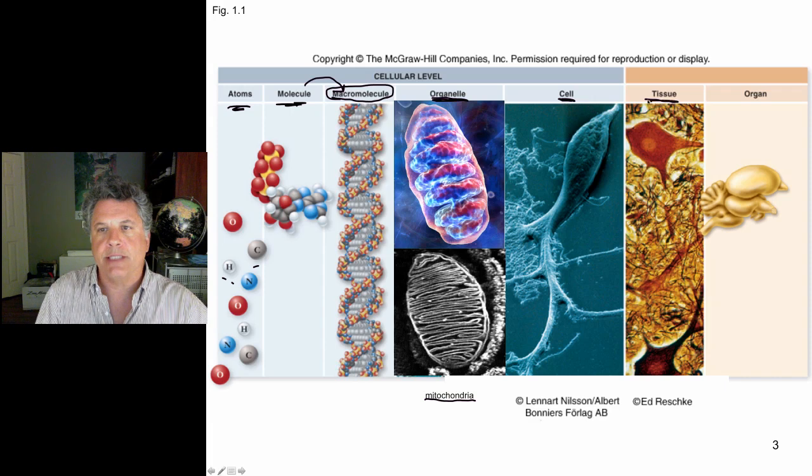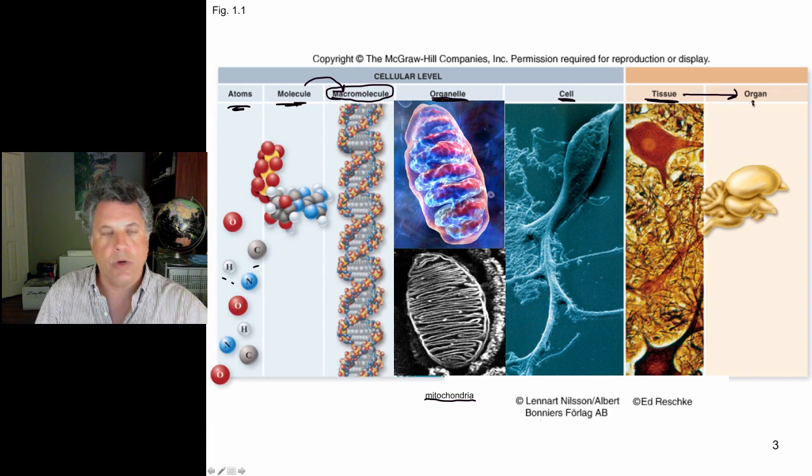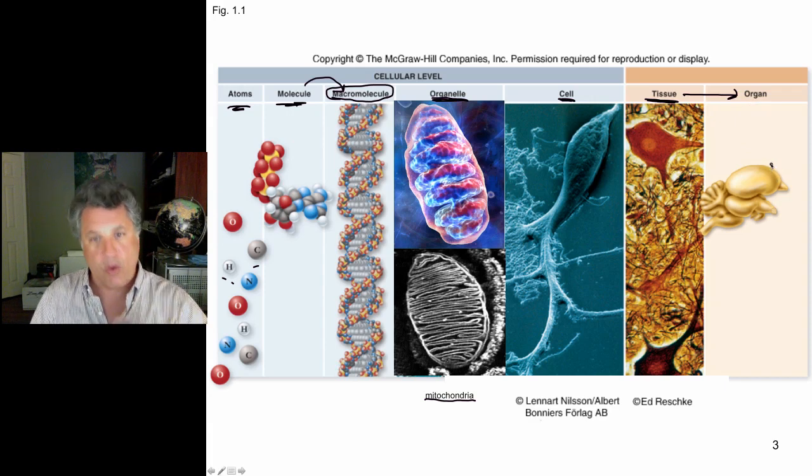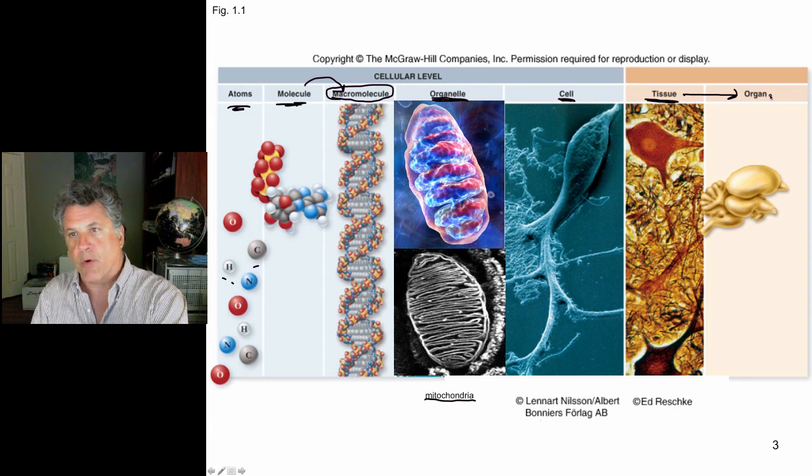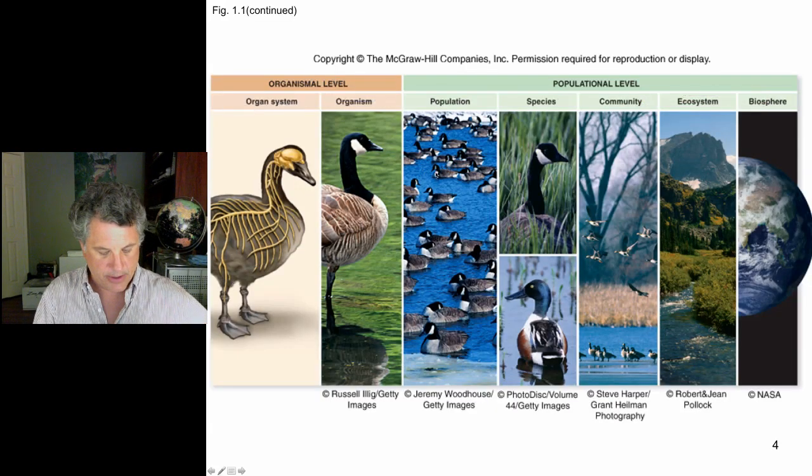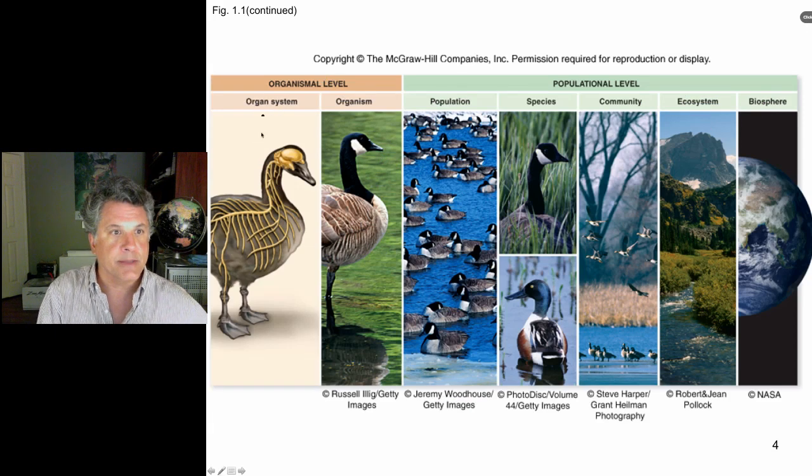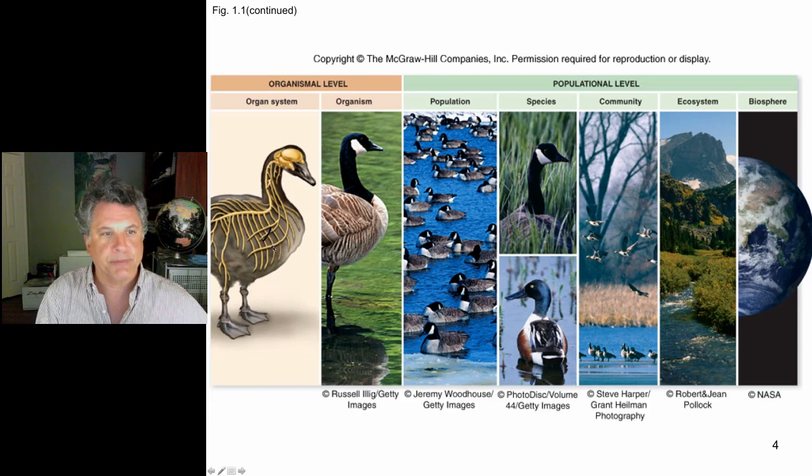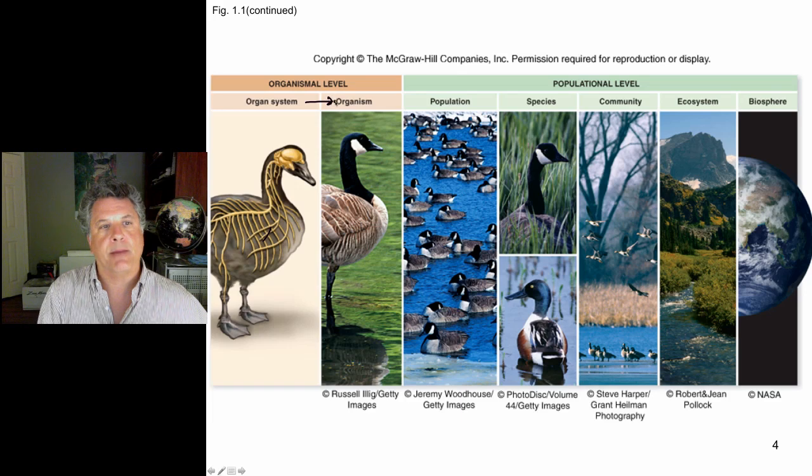Cells are then organized into tissues in multicellular organisms at least. And those tissues are further organized into organs. So we see a sequential build up in the hierarchy of the orderedness of matter in living organisms. And we can move from organs to entire organ systems like the nervous system that would be found in a vertebrate or an invertebrate. And then those organ systems are assembled into an organism like this Canada goose here.